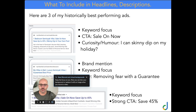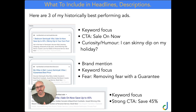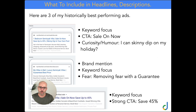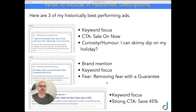So you can see what we're doing — we're testing different combinations of the four elements. The biggest thing we always find is that you need to include fear, curiosity, or humor — that emotional trigger — along with a strong call to action. Why should they click on your ad today?